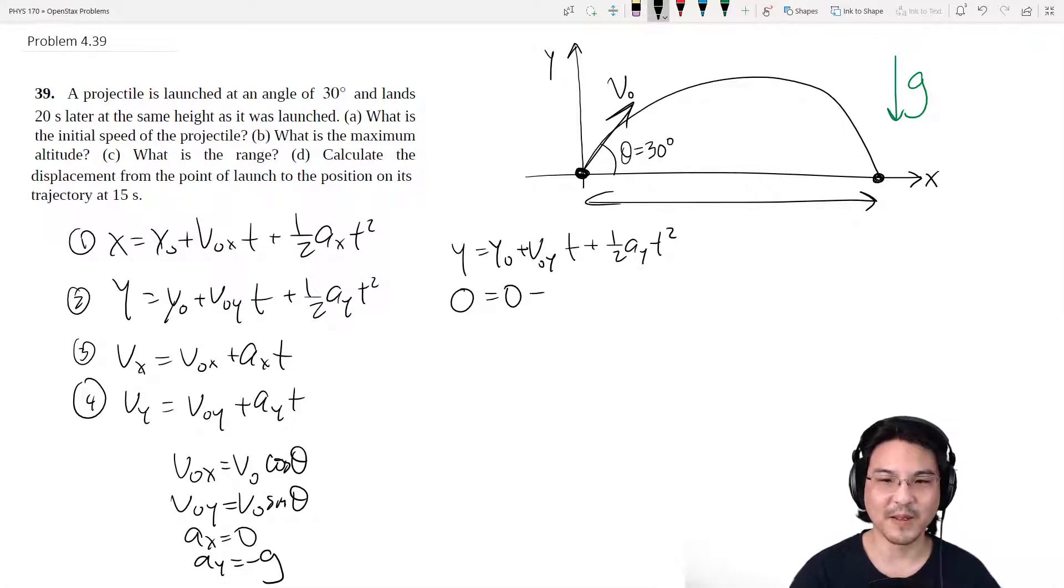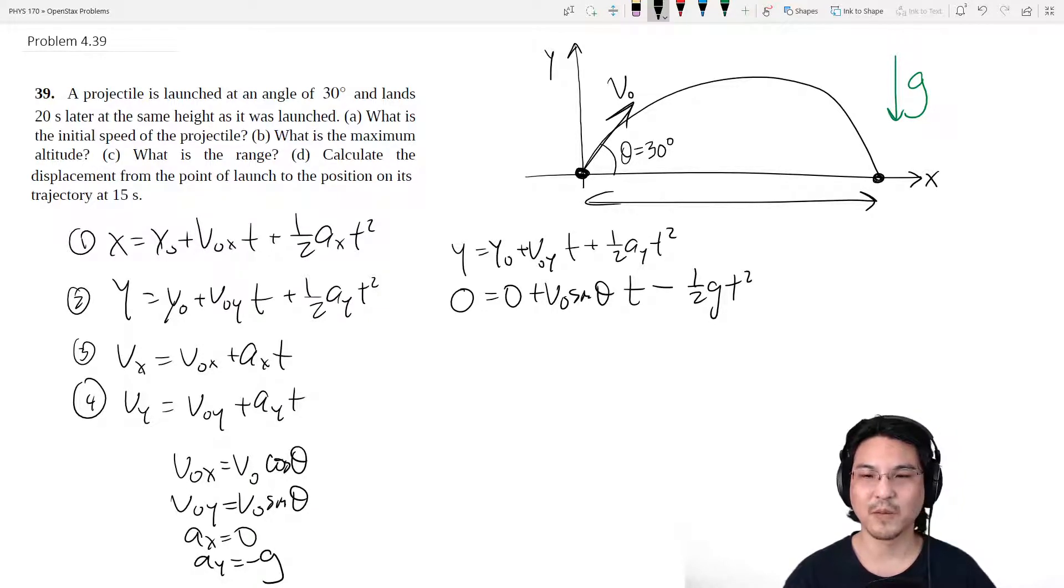Okay, so V-naught y would be V-naught sine theta, T, Ay is negative g, so negative. Okay, and then what do we know and what do we not know? I don't know this. Theta, 30 degrees, T, 20 seconds.